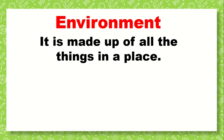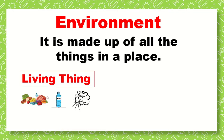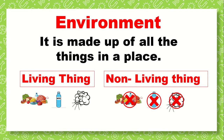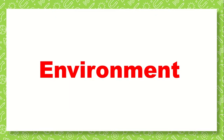Environment is made up of all things in a place — all things like living things that need food, water, and air, and non-living things that don't eat food or drink water or need air. So the environment is made up of all things in a place, like living things and non-living things. Environment.